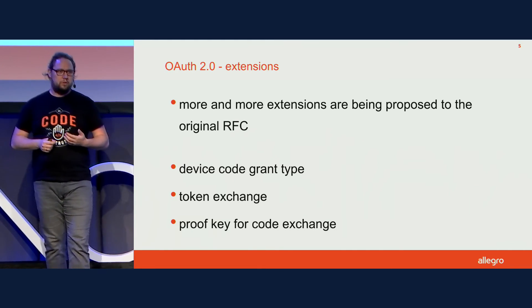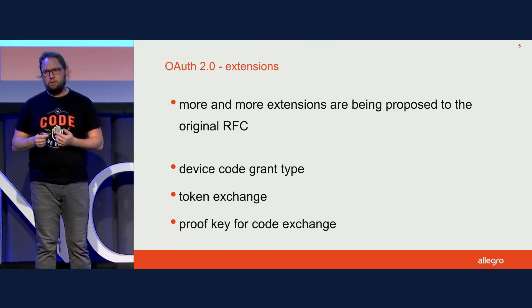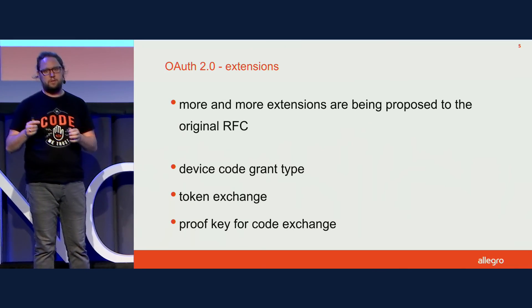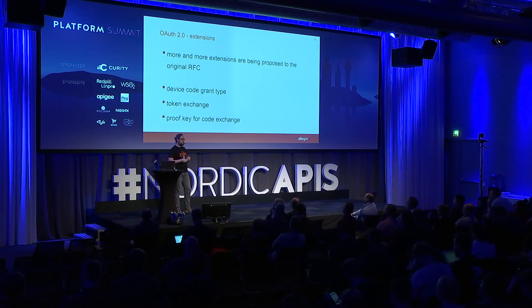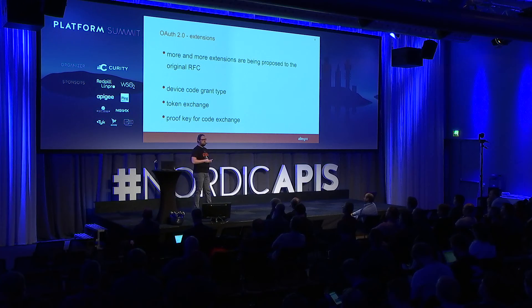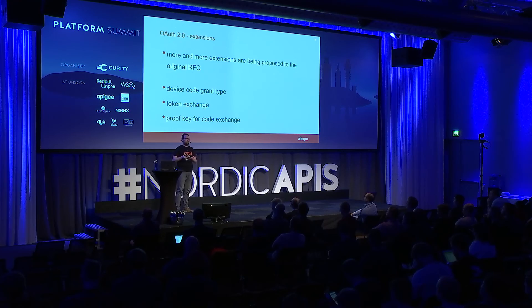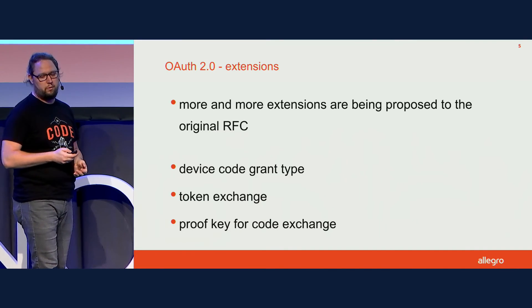Today I'd like to show you a few examples of those extensions, to demonstrate that extensions can touch very different parts of OAuth. The examples I'll cover are: the device code grant type, which adds a whole new authorization flow; the token exchange, which adds features for a specific use case; and the proof key for code exchange, which adds more security to the authorization code flow.